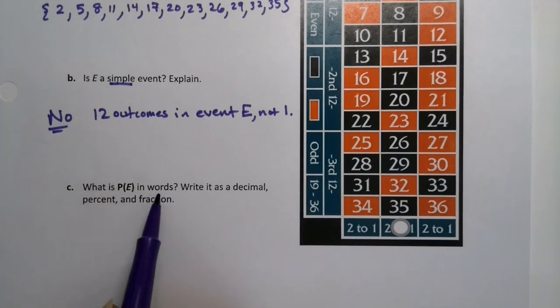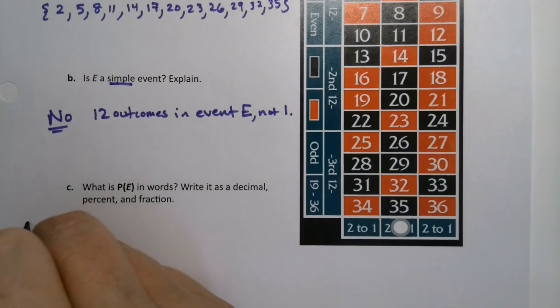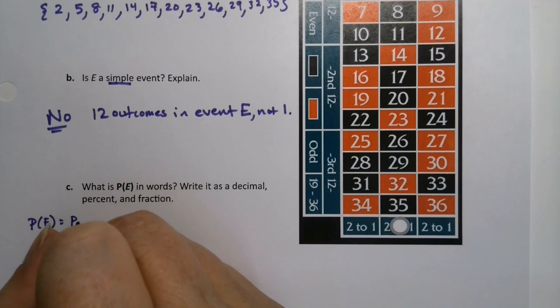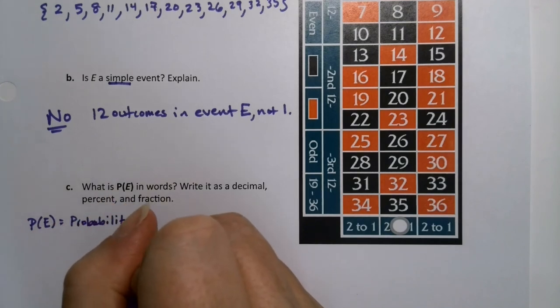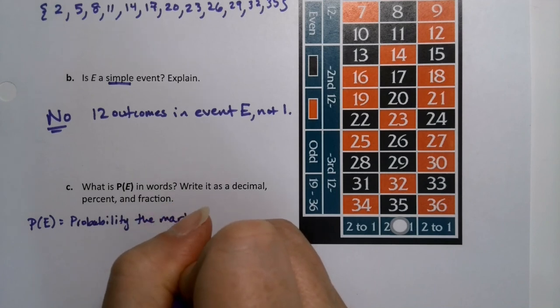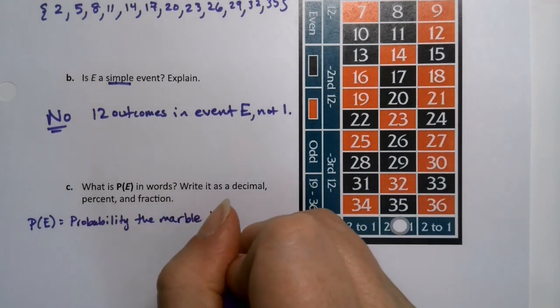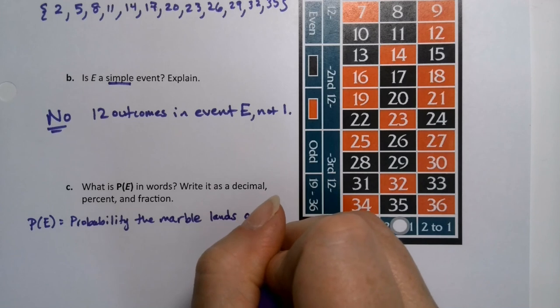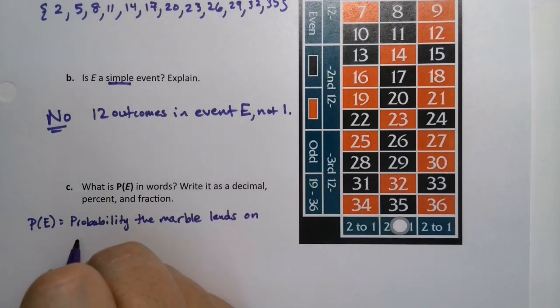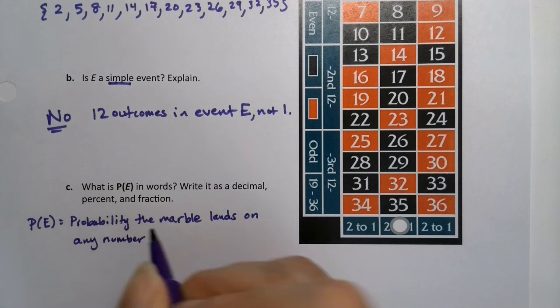What is the probability of event E in words? Well, let's see. The probability of E is the probability the marble, because it's a little marble on a wheel, lands on any number in the second column. And again, if you wanted to list them out, you could.